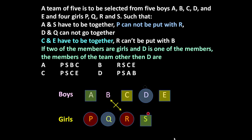Since S is selected, we have to take A because A and S have to go together. So now we have selected two boys D and A, and one girl S. We need to select one more girl and one more boy.